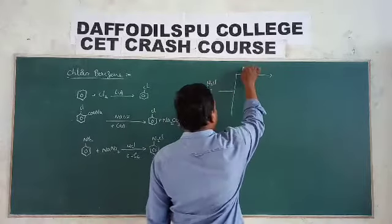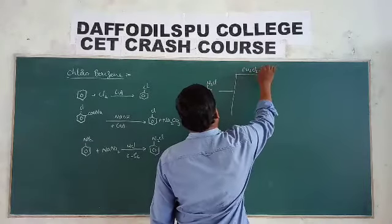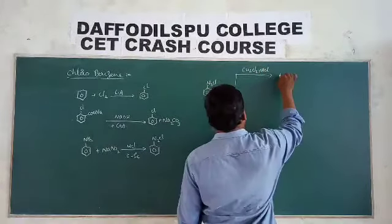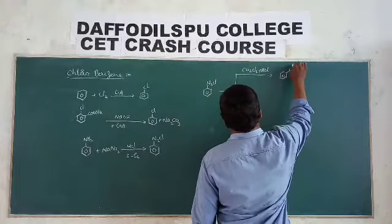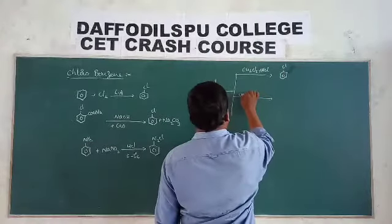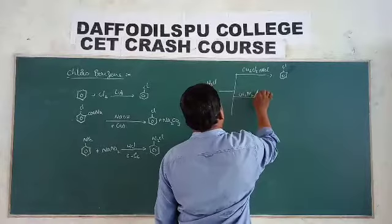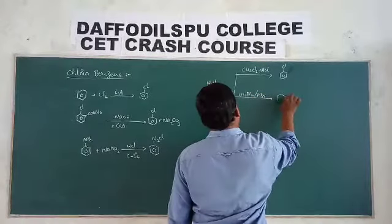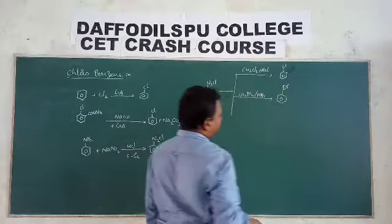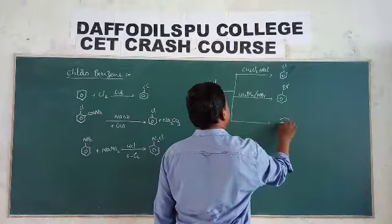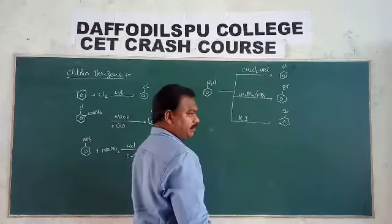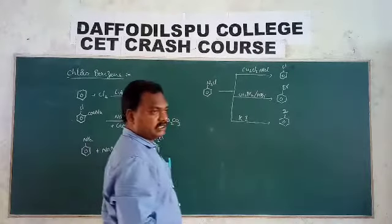Reaction with cuprous chloride and HCl gives chlorobenzene. When this reacts with cuprous bromide and HCl, we get bromobenzene. To obtain iodine substitution, you need to take potassium iodide to get iodobenzene.